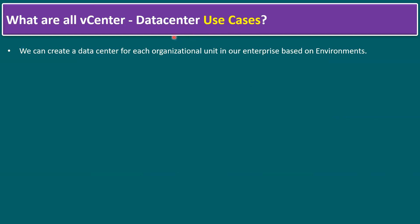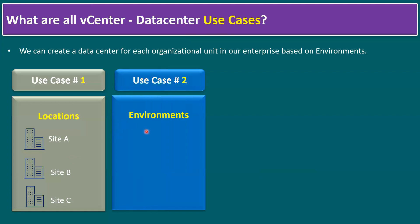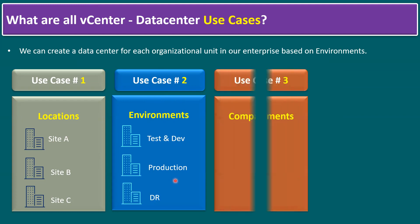Another basic point: what are the vCenter datacenter use cases? Within vCenter Server we can create multiple datacenters — one for each organizational unit or based on environment. For example, we can create datacenters named Site A, Site B, and Site C. If your datacenter is in Singapore, you can name it by location. Another use case: datacenter names based on environments — one named Test and Development, one Production, and one Disaster Recovery.